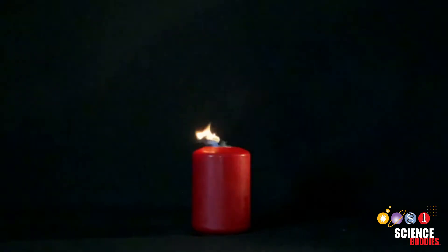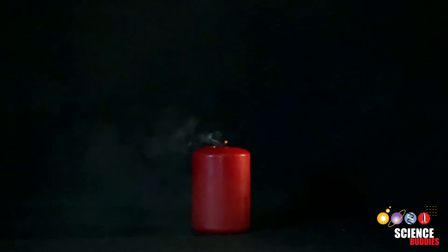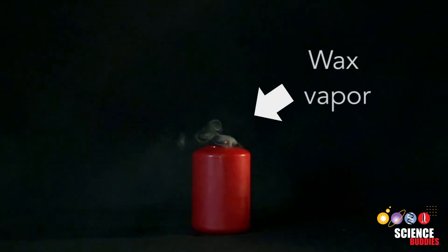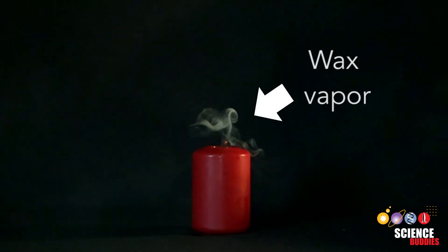Once a candle goes out, the hot wick continues to vaporize the wax as it cools down. You can see this wax vapor escaping as a stream of white smoke.